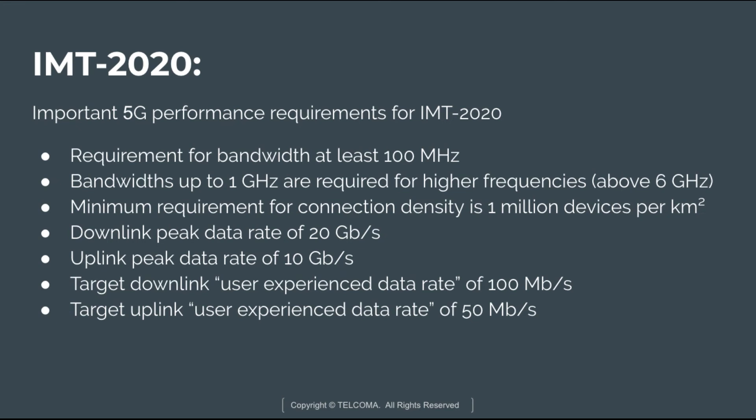The important 5G performance requirements for IMT 2020 are: first, the requirement for bandwidth is at least 100 MHz; the bandwidth up to 1 GHz is required for higher frequencies above 6 GHz; the minimum requirement for connection density is 1 million devices per kilometer square; and the downlink peak data rate is 20 Gbps.